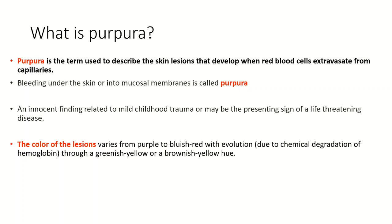What is purpura? It is a term used to describe skin lesions that develop when erythrocytes extravasate from the capillaries — meaning whenever there is extravasation of red blood cells in the skin or mucosal membrane, the lesion we see is called purpura. Purpura can represent many conditions, from something as benign as trauma to the presenting sign of a life-threatening disease. The color of the lesion is not important because it depends on the age of the lesion, the color of the skin, and the fragility of the surrounding tissue.